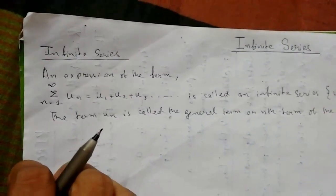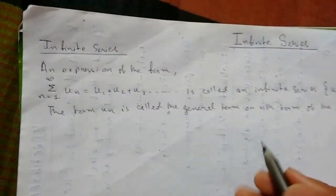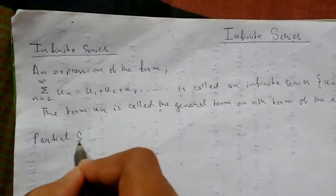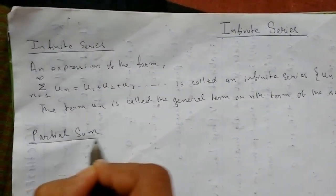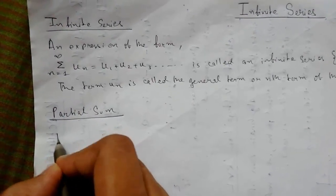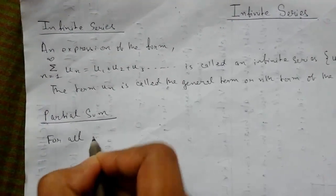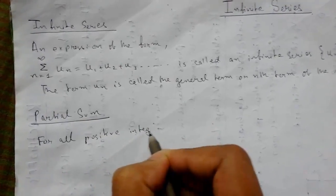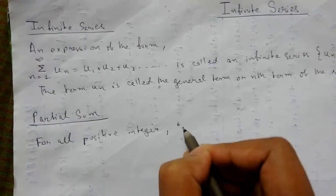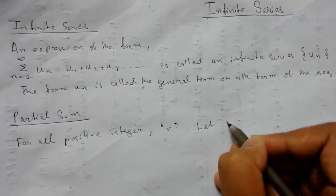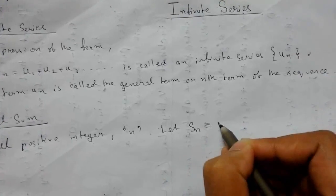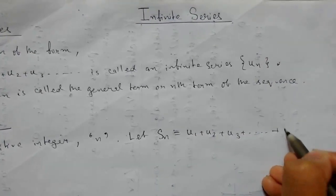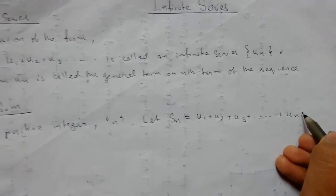So this is what our infinite series looks like. Now next is partial sum. Let us define it. For all positive integers n, let SN equals u1 plus u2 plus u3 to UN.